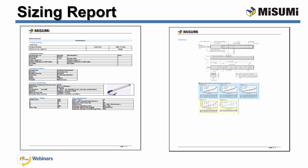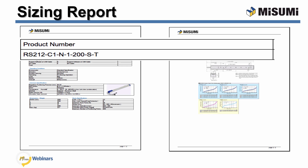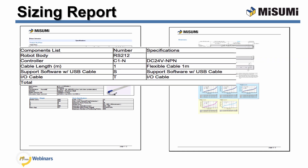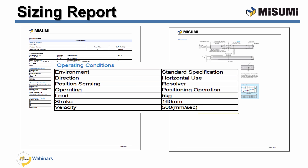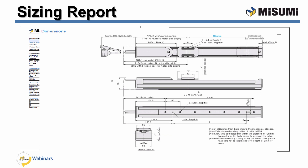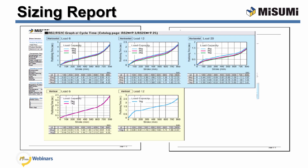Once you've completed the selection of all the accessories, you've completed the robot selection report. With this report, you get a complete part number for the robot with the controller and all selected accessories, a listing of all the components you've selected, a listing of all the operating conditions selected for the robot, a complete set of drawings of the robot, and a set of cycle time charts.